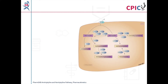This is the PharmGKB amitriptyline and nortriptyline pharmacokinetics pathway. A link to this pathway is provided in the description below this video. This video will first focus on metabolism of amitriptyline by CYP2C19, followed by metabolism of amitriptyline by CYP2D6.